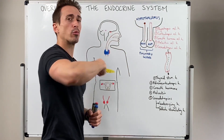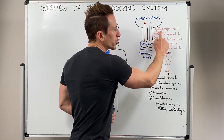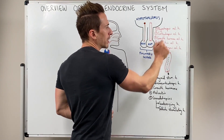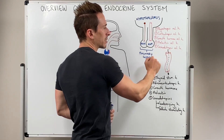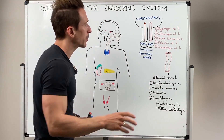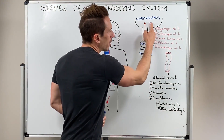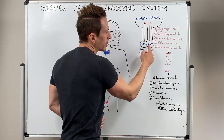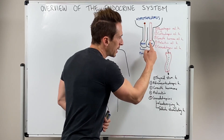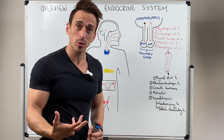What the hypothalamus does is it produces and releases a number of important hormones. These include thyrotropin-releasing hormone, corticotropin-releasing hormone, growth hormone-releasing hormone, prolactin-releasing hormone, and gonadotropin-releasing hormone. Predominantly, the hypothalamus will produce and release these hormones and they'll travel through the blood supply that connects the hypothalamus to the anterior lobe of the pituitary gland, where they stimulate hormones in the anterior pituitary to be produced and released.